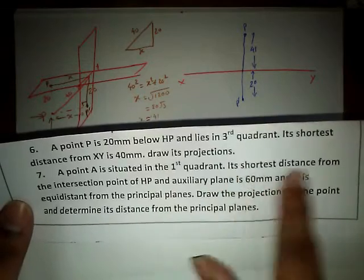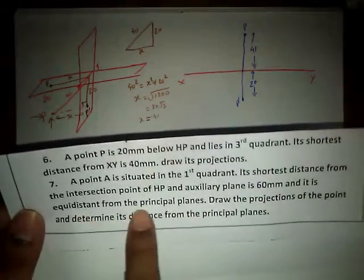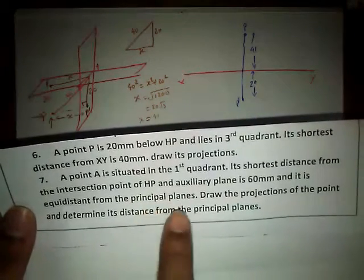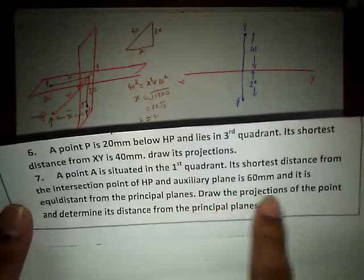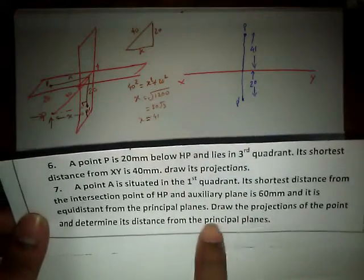The intersection at the shortest distance is 60 mm and the point is equidistant from principal planes. Principal planes are nothing but the HP and as well as the VP. So draw the projections of the point and determine its distances from the principal planes.